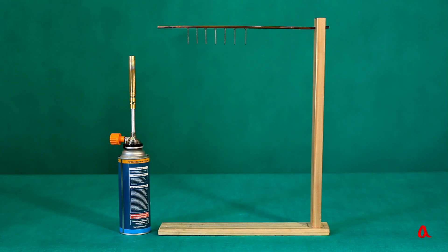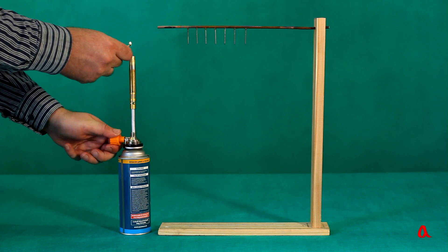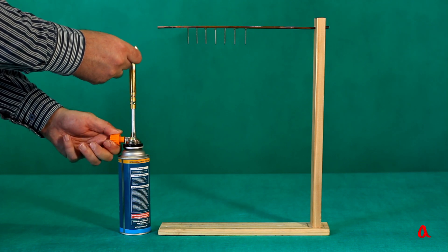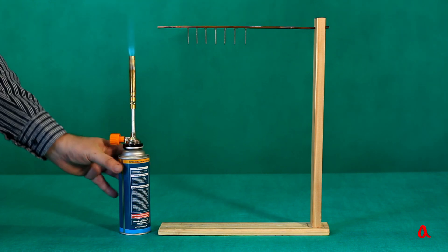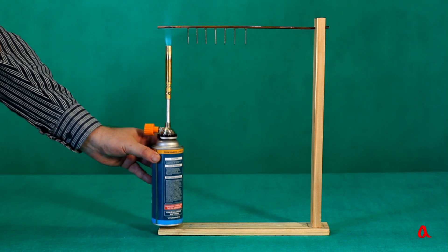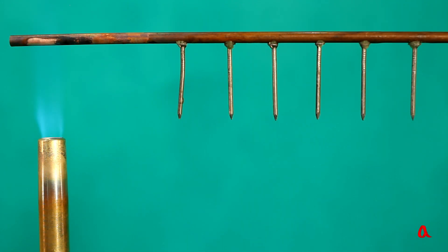To see how heat propagates in a solid, let's conduct an experiment. Iron nails are wax attached to a copper rod at equal distance from each other. We light a gas burner and move it near one end of the rod. The heat from the heated end propagates through the rod and when the temperature near the next coming nail becomes equal to the temperature of wax melting, the nail falls down.